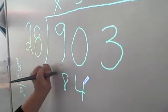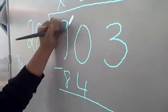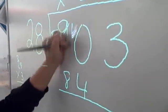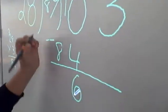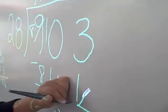I mean 90 minus 84, and you can't do 0 minus 4, so I regrouped, and 10 minus 4 is 6, and 8 minus 8 is 0. I brought down my 3.